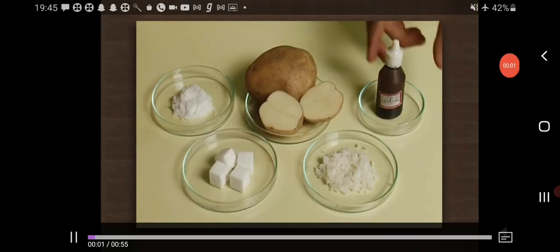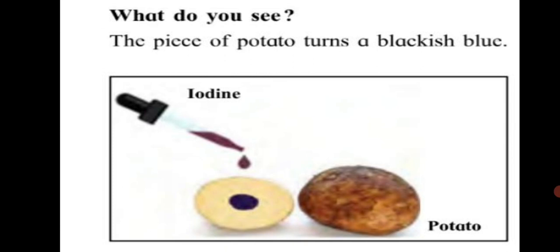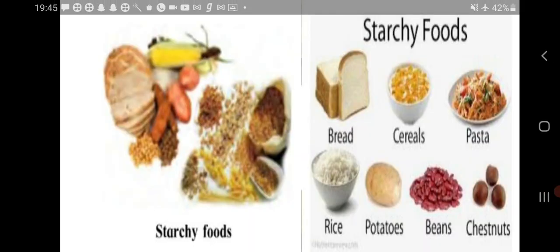On sugar and salt, we see no change in the color of iodine. That means, we can say that the piece of potato turns blackish blue due to the presence of starch in it. Starch turns blackish blue when it comes in contact with iodine. So we can infer that there is starch in the potato.